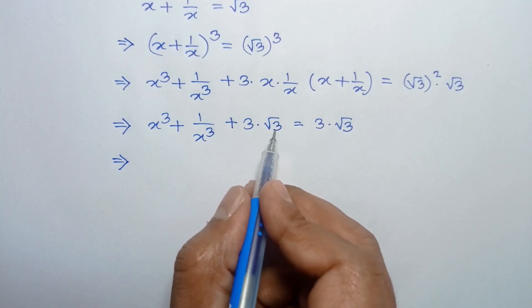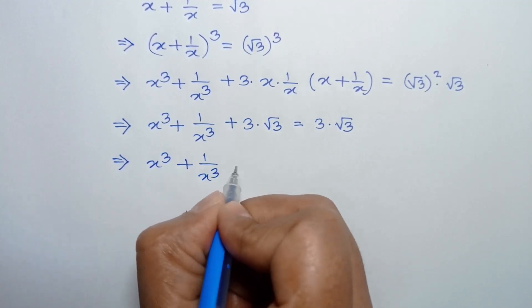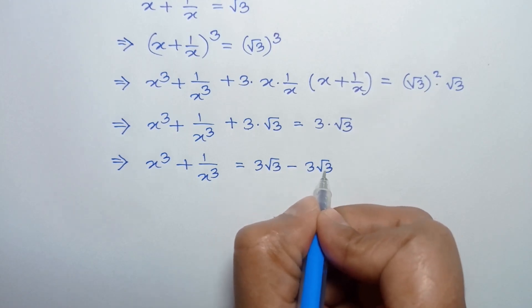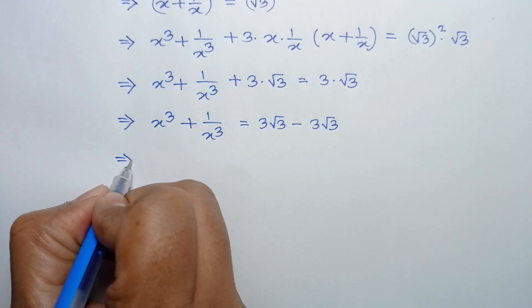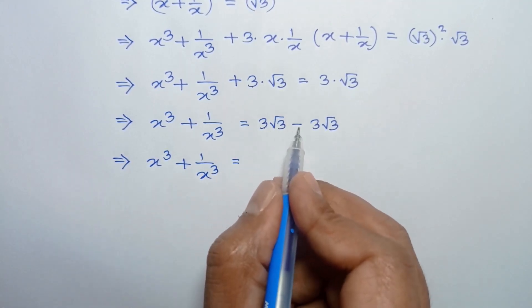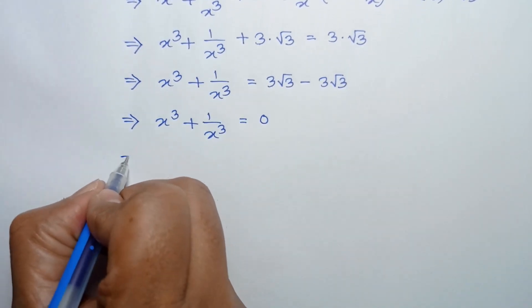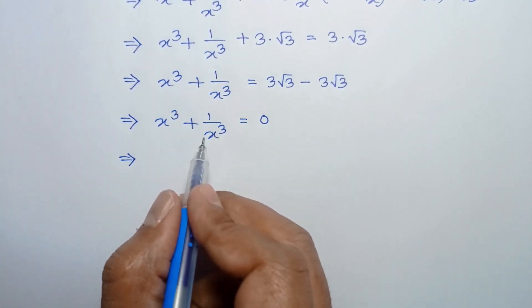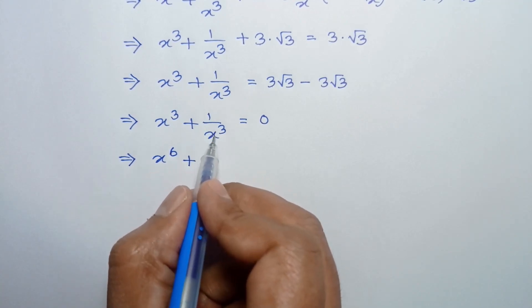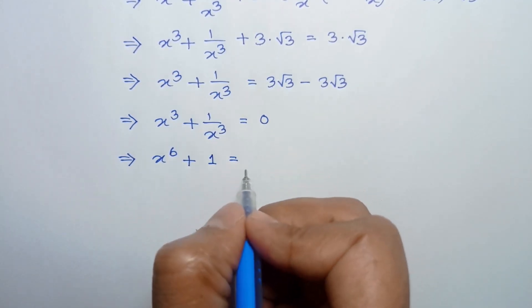Taking 3 times square root of 3 to the right side, we can write x cube plus 1 over x cube is equal to 3 square root of 3 minus 3 square root of 3, which equals 0. Multiplying both sides by x cube, x to the power 6 plus 1 equals 0, since x cube times x cube is x to the power 6 and the x cubes cancel to give 1.